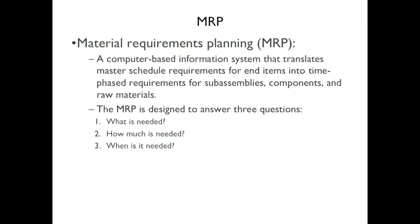Material Requirements Planning, or MRP, is a computer-based information system that takes your master schedule requirements for end items and puts time-phased requirements for subassemblies, components, and raw materials. The MRP is designed to answer three questions: What is needed? How much is needed? And when is it needed?